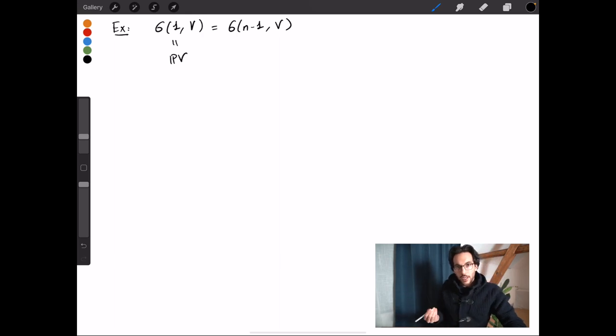On the other side, we realized that G(n-1,V*), maybe I put a star here, these are hyperplanes or codimension 1 linear subspaces in V*. This we denoted previously by hat, and this was our duality from before.